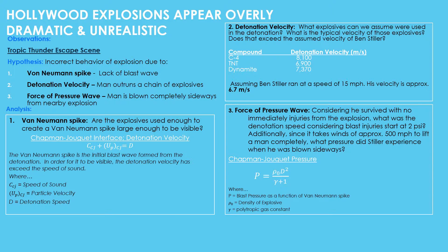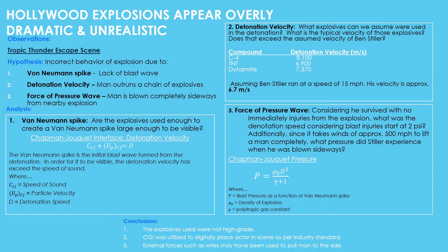After comparing what was seen in the movie to theories and actual real-world explosions, we have concluded the following: the explosives used were not high-grade; CGI was utilized to place the actor in the scene, as per Hollywood industry standard; and external forces, such as wires or pulleys, were utilized to pull the man to the side.